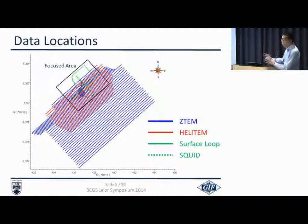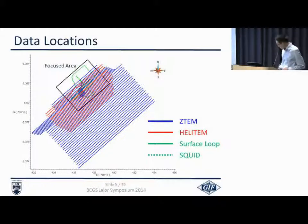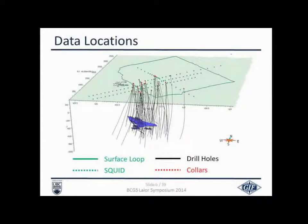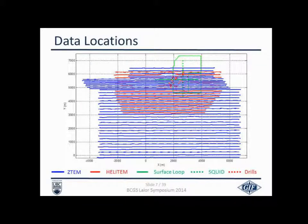To give you an idea of the relative locations of the data sets I'm going to use: this is in UTM coordinate system. We have Z-TEM, heli-time, and surface loop with SQUID. This shows the projection of the ore body on the surface in plan view. The big loop and the green dots are SQUID receivers. Those are drill holes with the ore body. For the rest of my talk, I'm going to use a local coordinate system — the ore body is somewhere around x equals 2,000, y around 5,600.